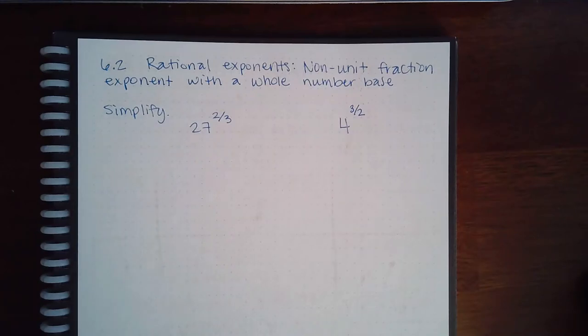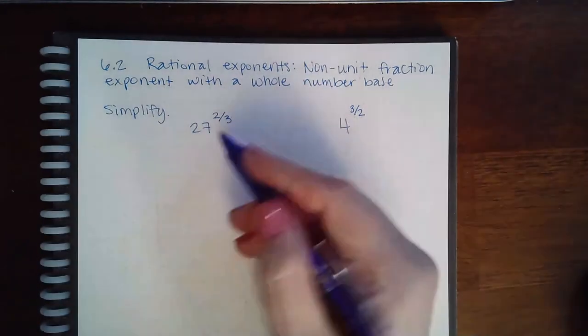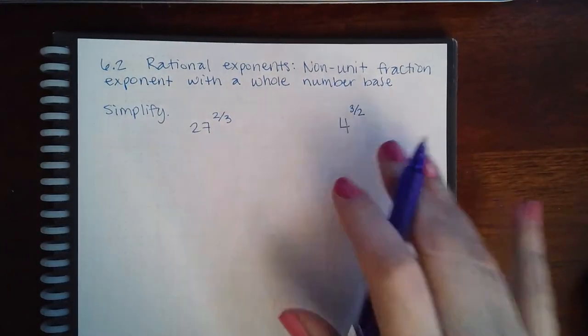Okay, here we have 6.2 rational exponents: non-unit fraction exponent with a whole number base, and we have to simplify this. So we're going to put them in their radical form.